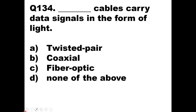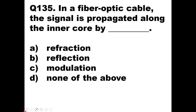Question 134: Dash cables carry data signals in the form of light. Twisted pair and coaxial carry signals as electric current. Fiber optic carries data signals in the form of light, so option C is correct. Question 135: In a fiber optic cable, the signal is propagated along the inner core by dash. Light traveling within the core follows the principle of total internal reflection, so the answer is option B — reflection.